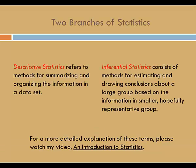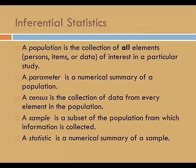Let's discuss some of the vocabulary of inferential statistics. Inferential statistics consist of methods for estimating and drawing conclusions about a large group based on the information in a smaller, hopefully representative group. The larger group is called a population — the collection of all elements of interest in a particular study. A parameter is a numerical summary of a population. A census is the collection of data from every element in the population. A sample is a subset of the population from which information is collected, and a statistic is the numerical summary of a sample.